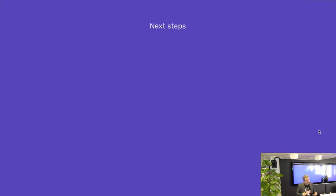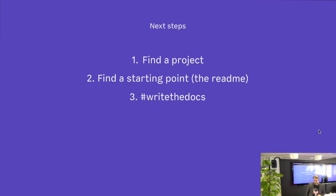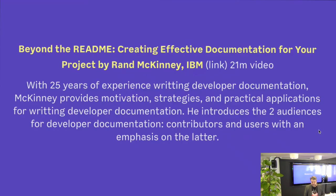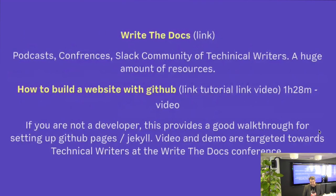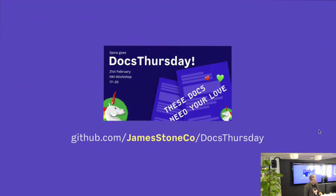If you're interested in any of the topics here, I'll flip through some resources — further reading where you can go much deeper. What can you do if you're interested in improving the documentation on your project? Find a project, find a starting point — the readme is probably the first place to start. There's also the hashtag Write the Docs — a community of technical writers with conferences. You can check out the hashtag, publish something, or come to Docs Thursday and write some docs with all of us. All the slides and information are at github.com/jamestoneco/docs-thursday.